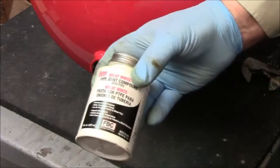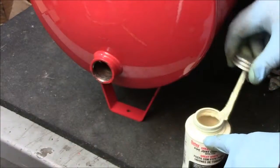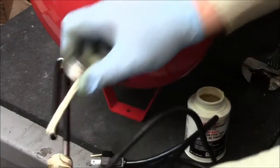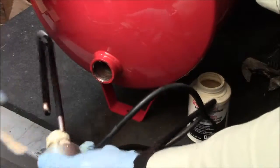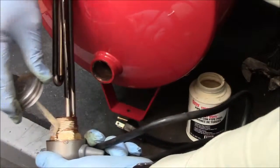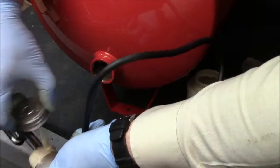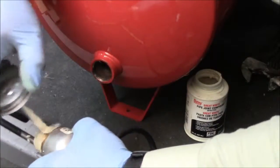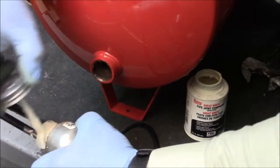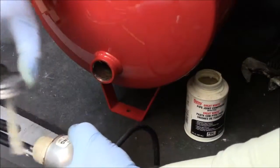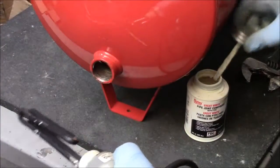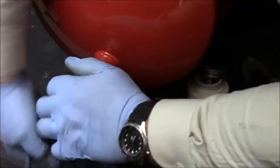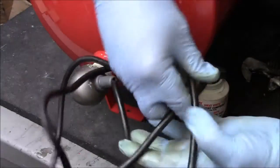All right now we want to use pipe joint compound. Put it on the thread, make sure you get it all the way around. Just insert it back into the hole and get it finger tight again.